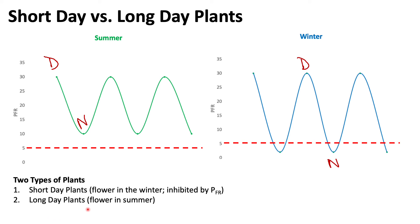For long day plants, it is the opposite: Pfr actually promotes flowering. In long day plants, when there is an accumulation of Pfr during those long summer days — because Pfr does not have enough time to be converted back into Pr during the short nights — that high accumulation promotes flowering.